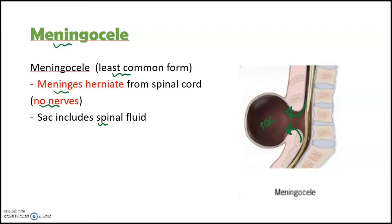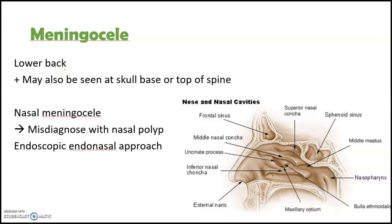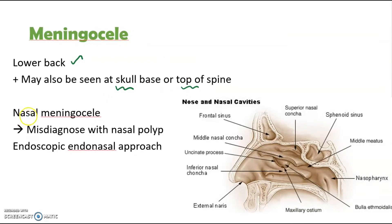The sac includes the spinal fluid. Meningocele is not likely to cause long-term damage to your health as the nerves remain undamaged. Just like other types of spina bifida, meningocele usually occurs on the lower back, but it may also be seen at the skull base or the top of the spine. Herniation of the meninges into the nasal cavities due to a bone defect in the base of the skull is known as nasal meningocele.